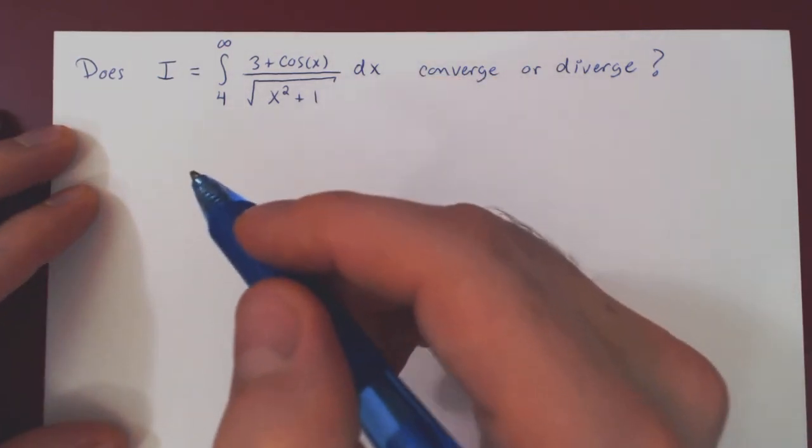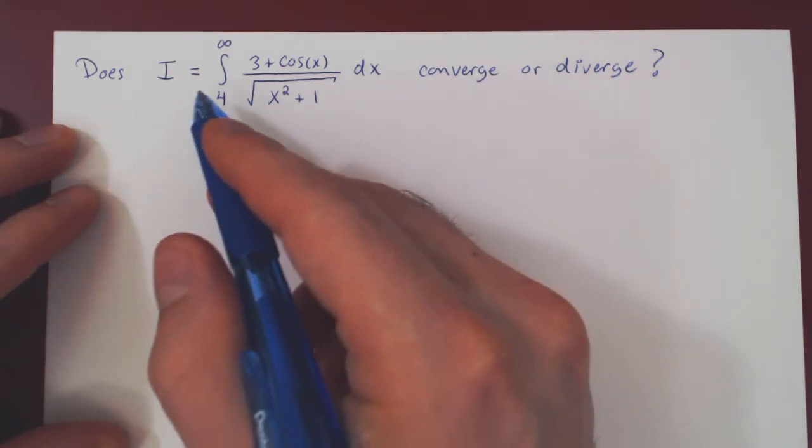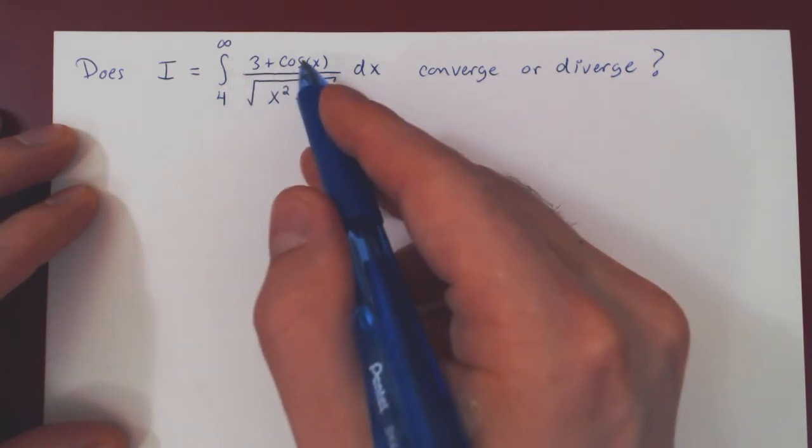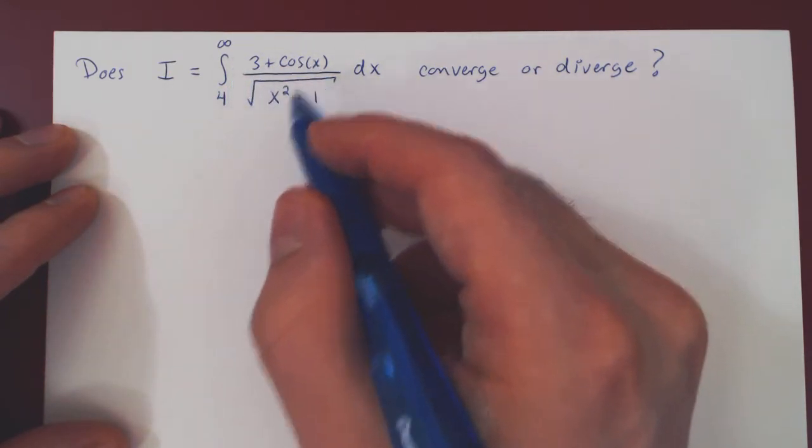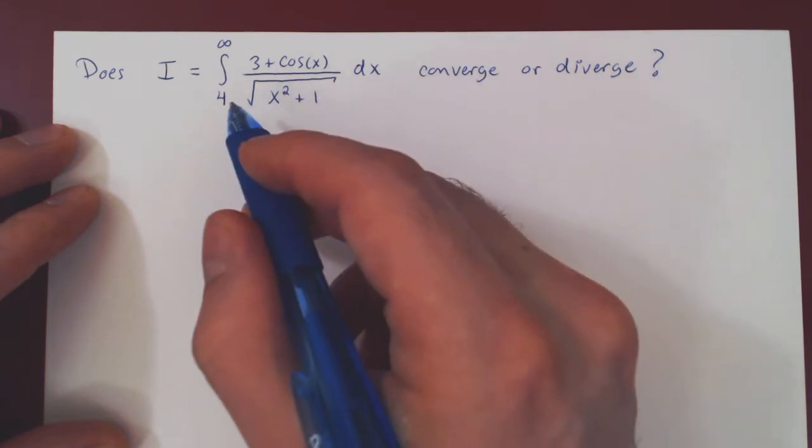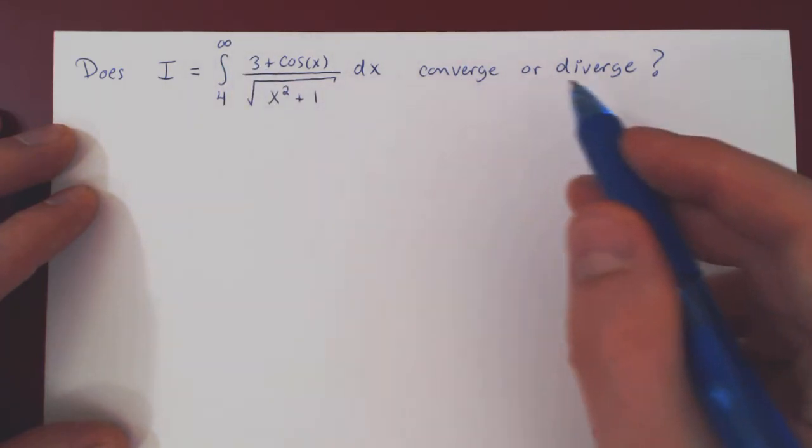Okay, so in this video we are asking the question: does the integral of (3 + cos(x))/√(x² + 1) from 4 to infinity converge or diverge?